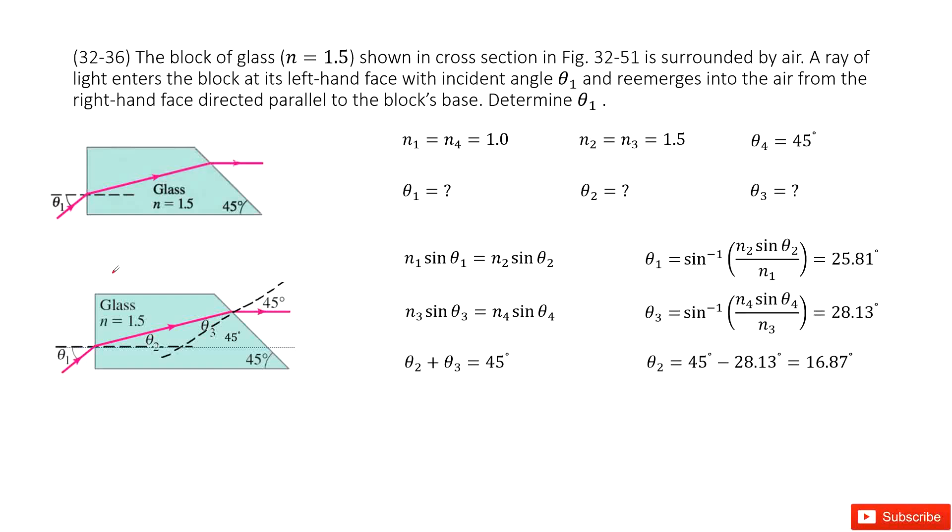We have this system where N1 is in the air. The light comes in as an incident wave this way with incident angle theta 1, and then it will get into the glass. For glass, we know the index is N2, and this is N3.